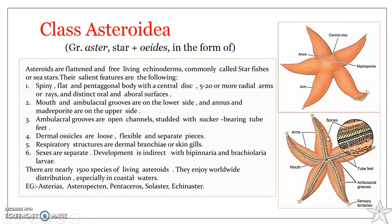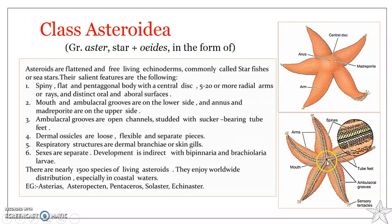The body is somewhat flattened and flexible, covered with ciliated pigmented epidermis. The mouth and ambulacral grooves are on the lower side, known as the oral side. The anus and madreporite are on the other side, referred to as the aboral side. On the oral surface, the mouth is located in the center of the central disc and is surrounded by a soft peristomial membrane.